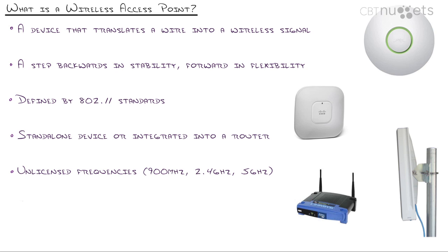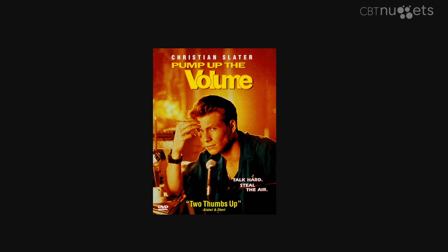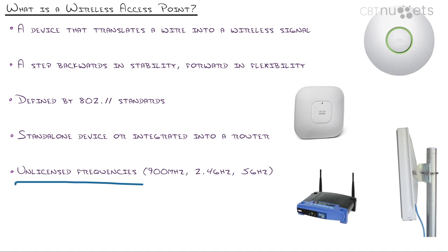Wireless access points run over unlicensed frequencies, which is a great thing — the government doesn't manage the frequencies you use. Like the movie 'Pump Up the Volume' with Christian Slater, where he ran a pirate radio station and got busted for broadcasting on managed frequencies. The great news is the government has said these frequency spectrums will not be managed, so you are free to bring up a wireless network, use a cordless phone, a Bluetooth headset, or any other broadcasting device in those frequencies without registering or paying.